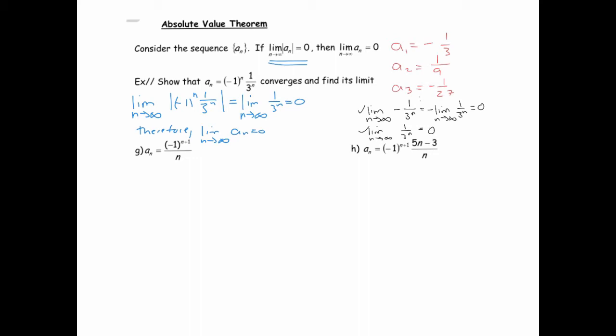So these two examples here, we can do pretty quickly. This first one here, let's see if we can apply this theorem. So I'm going to just take the limit of the absolute value. That's just this, which we know goes to zero. Therefore we can conclude that our original goes to zero as well.